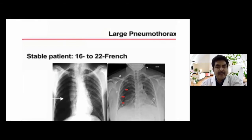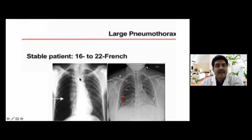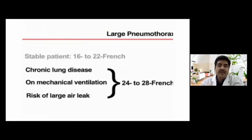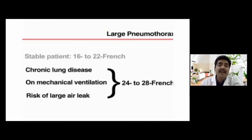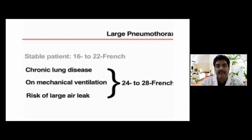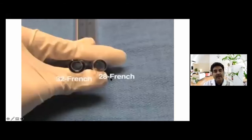Tube size depends on the patient's age and the indication. For simple pneumothorax, 16 to 22 French is sufficient since only air is draining. For pneumothorax with chronic lung disease, positive pressure ventilation, or risk of air leak, a wider tube of 24 to 28 French is recommended. For hemothorax or fluid drainage in adults, 20 to 40 French is used, commonly 20 to 30 French in daily practice.